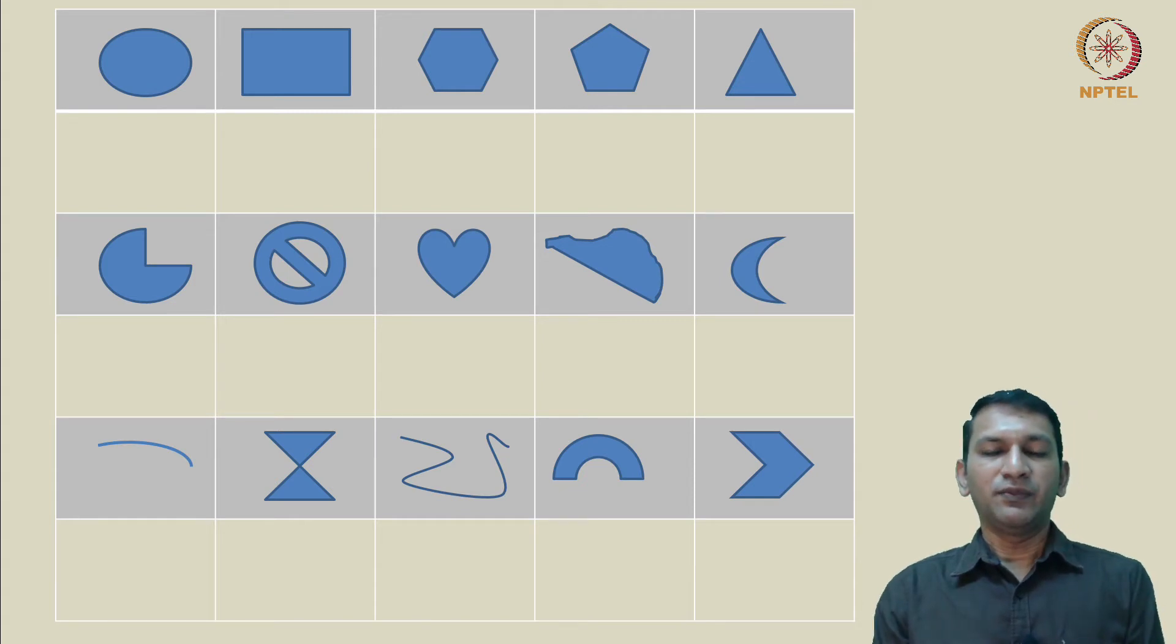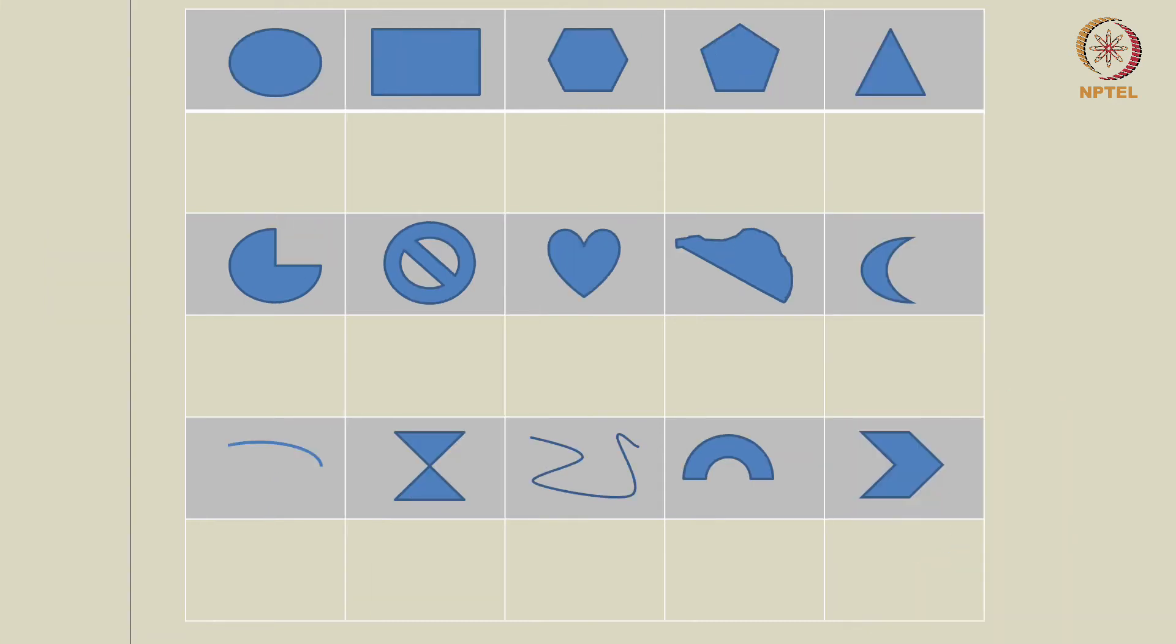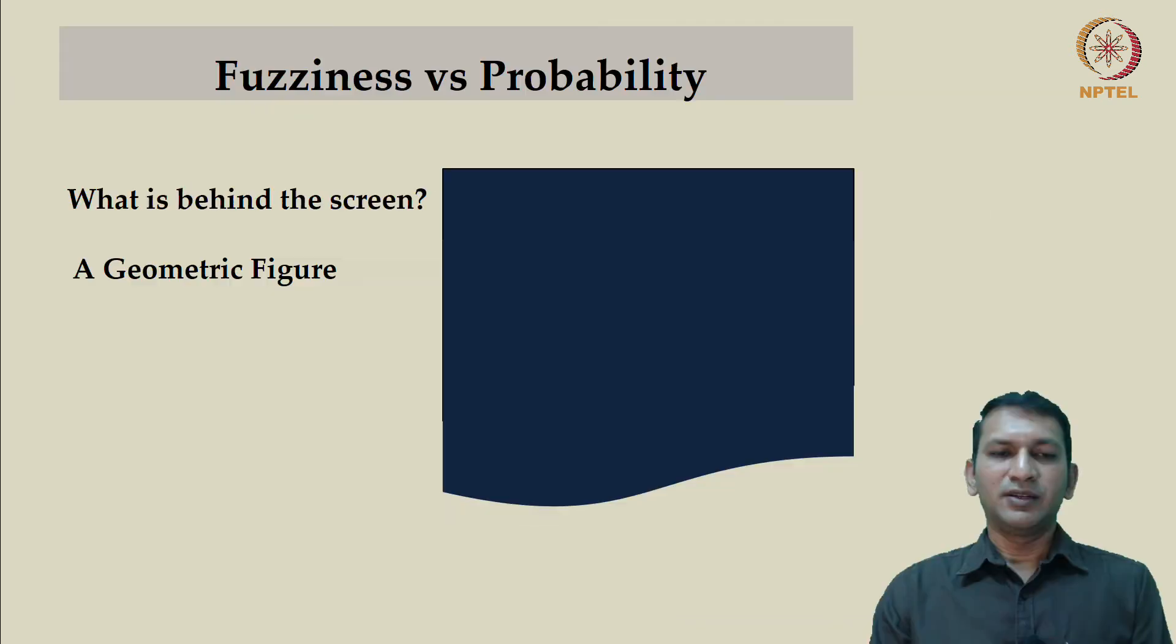With the given information and considering only these 15 figures as part of our sample space, we need to make a guess. In the absence of any other information, uniform prior is what you assign to each of these, which means the probability with which the figure hidden behind the screen could be a circle is 1 by 15. So, let us start filling these boxes with the corresponding probabilities.